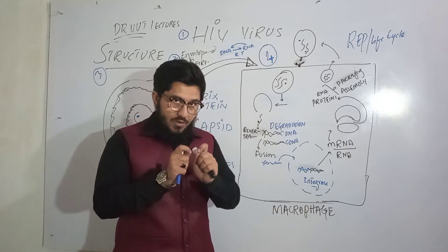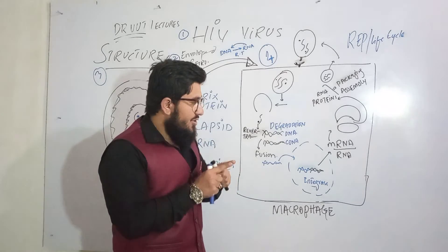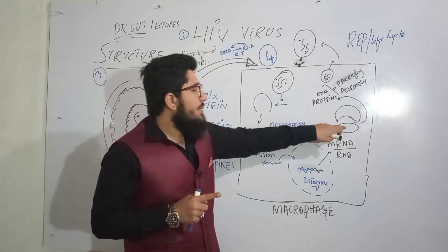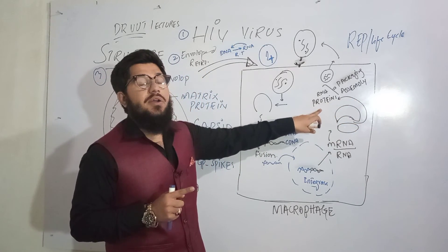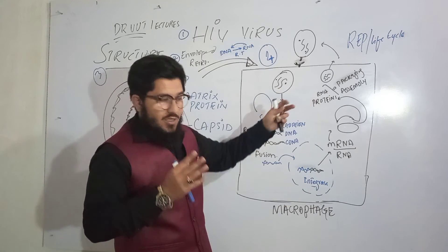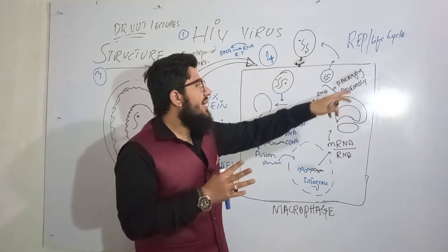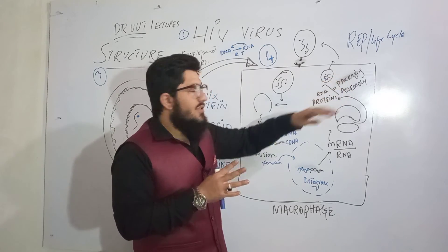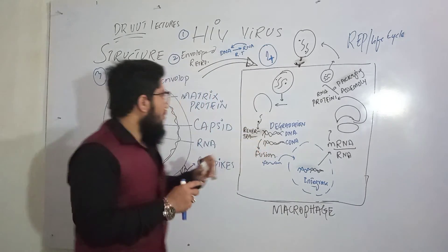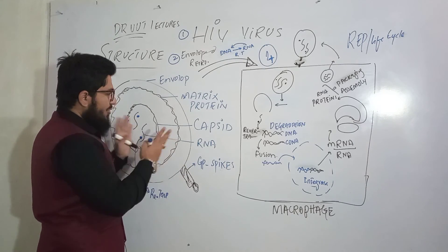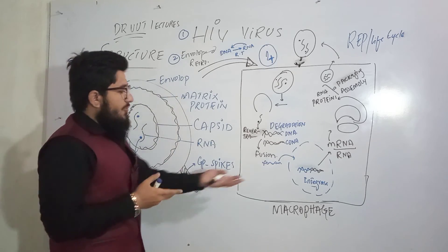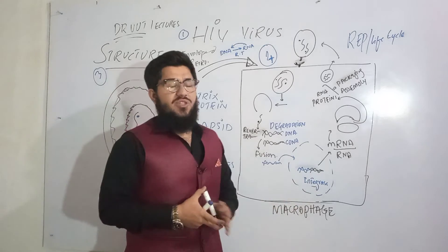From the same DNA, during transcription, two RNAs are produced: viral RNA and messenger RNA. The messenger RNA goes to the ribosomes and is translated to synthesize the required proteins. Then the RNA and those proteins start assembling, followed by packaging — specific proteins and RNA are packed together inside the matrix protein.